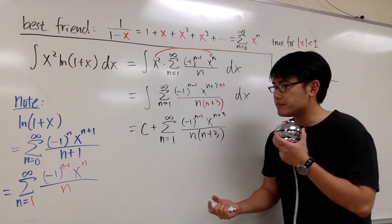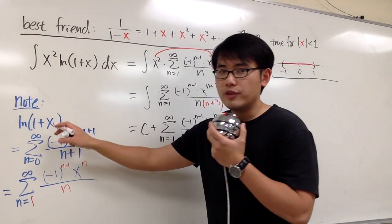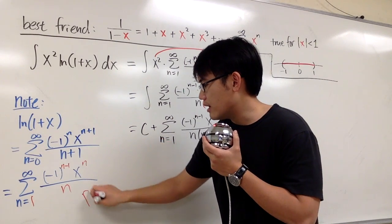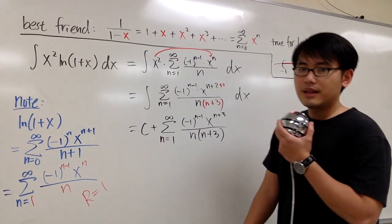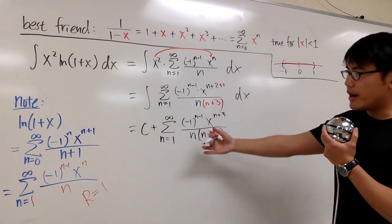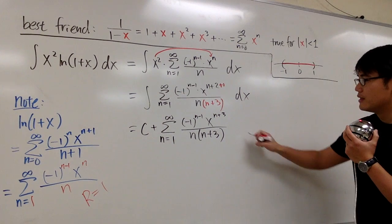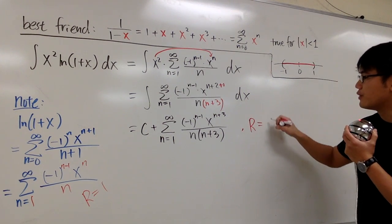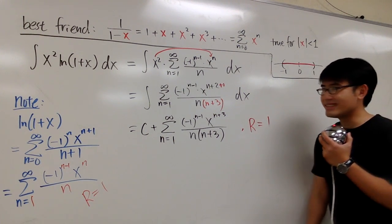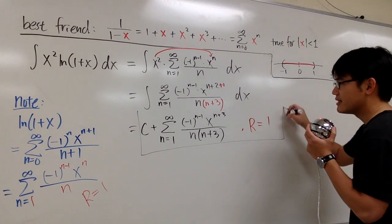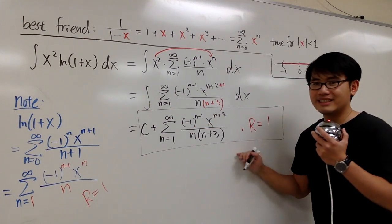And then I also want to make a remark. The radius of convergence for the ln of 1 plus x was that r is equal to 1. And because we integrate that function, the radius of convergence stays the same. So we can also say that the radius of convergence is also equal to 1. And with that being said, this completes this question.